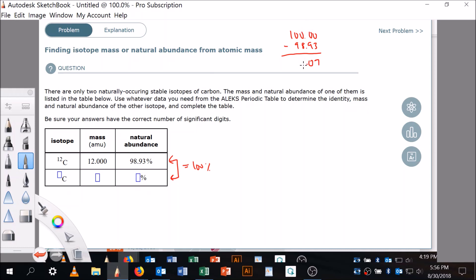That makes it 1.07%, right, because the sum of those two is 100%. All right, now that we know that, we're going to go to our definition of a weighted average.